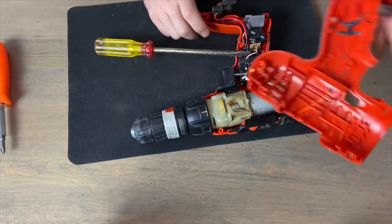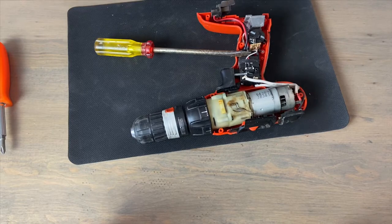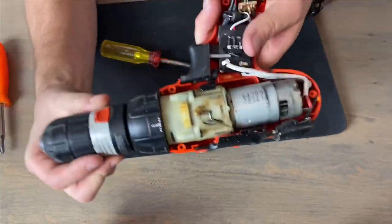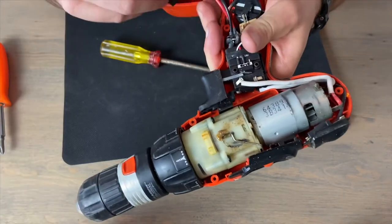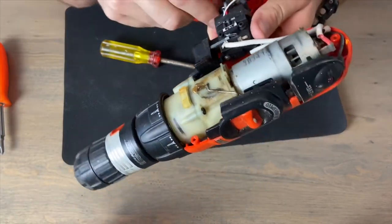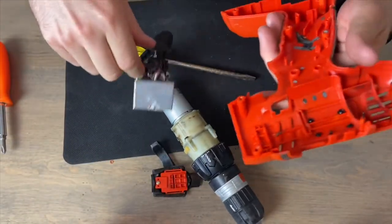There we go. So we have the housing here, just a piece of plastic. We'll get rid of that. And inside you can see we have the meat and potatoes of it. We have the battery terminal, comes in and goes through the trigger. And let's just take that all apart.